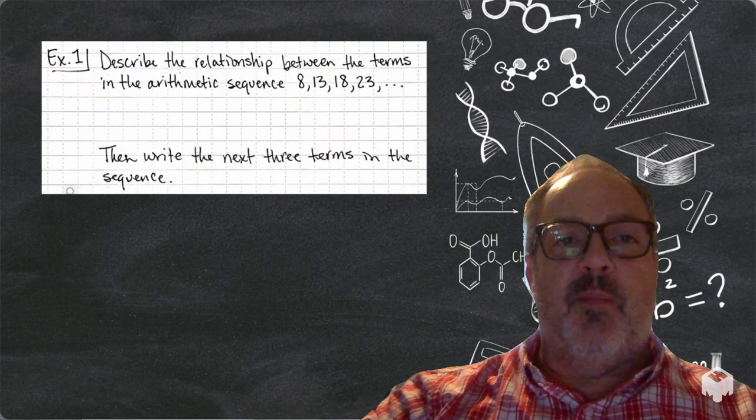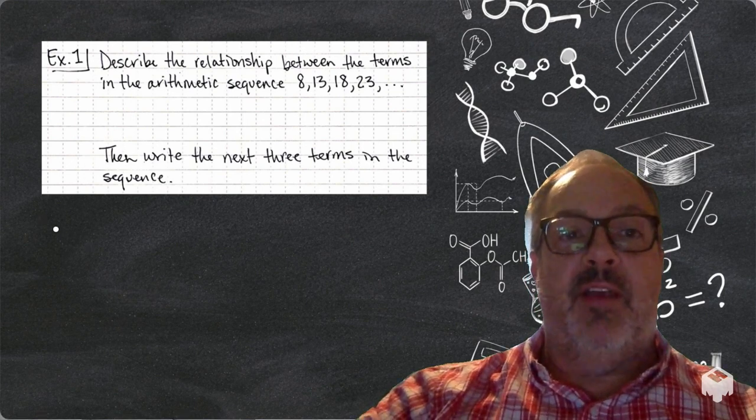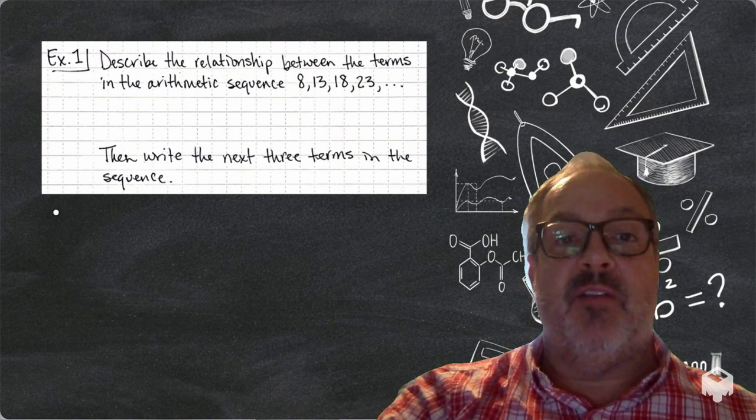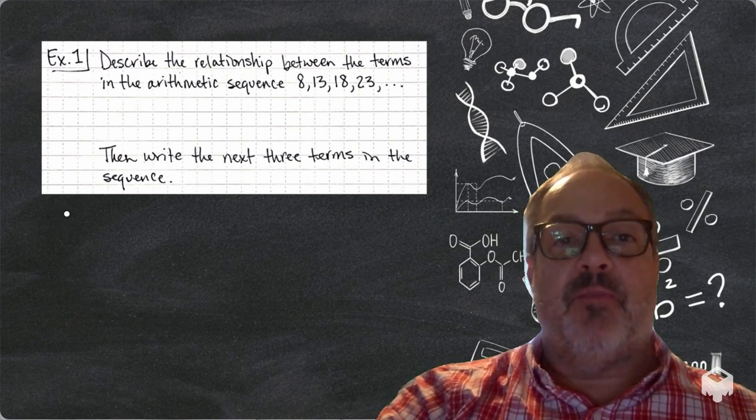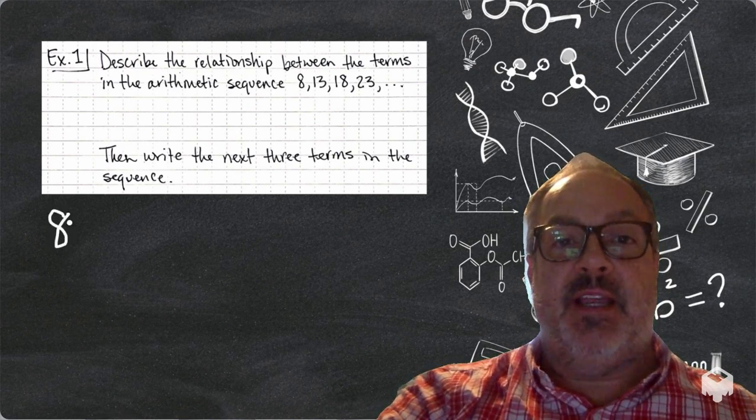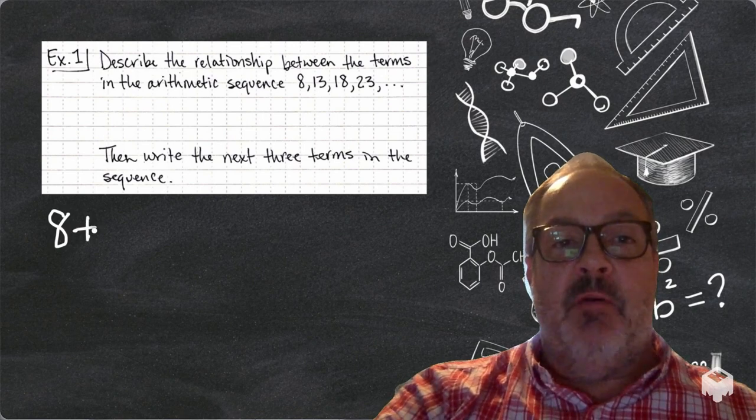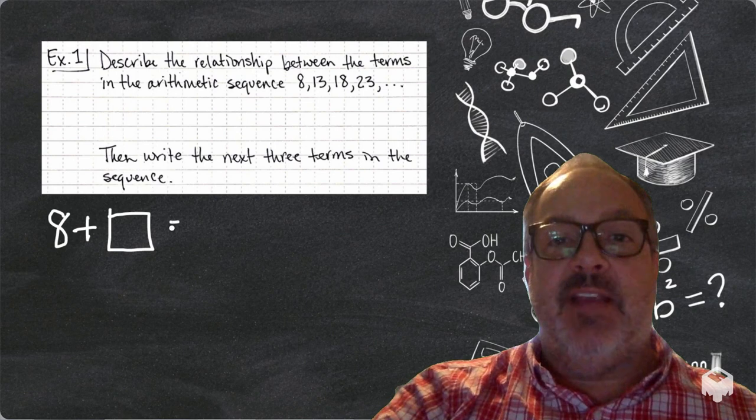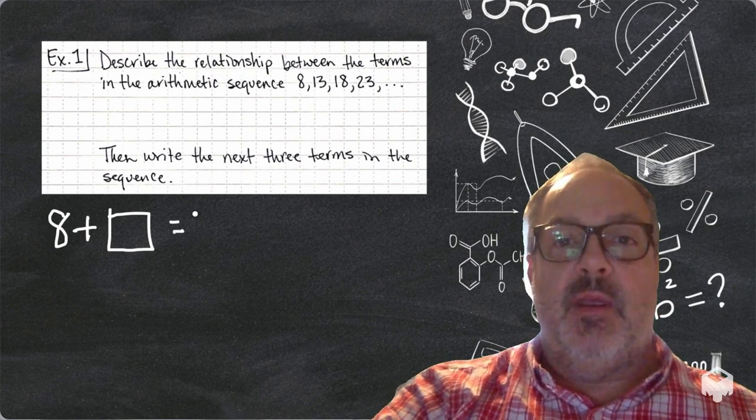In example one, we're trying to describe the relationship between the terms in this arithmetic sequence. We have 8, 13, 18, and 23. And what we want to find out is what's being added each time to each of the terms.